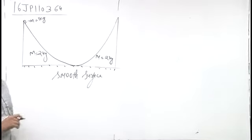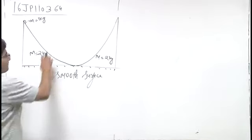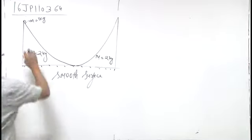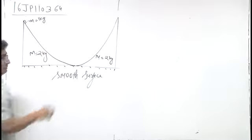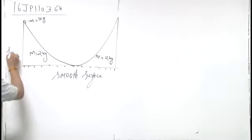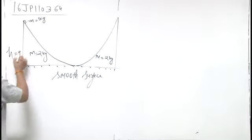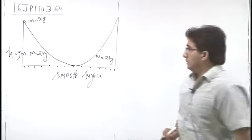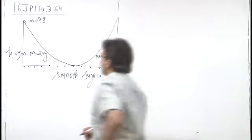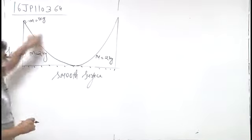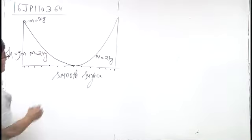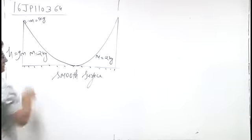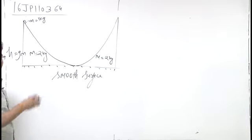In this question, all surfaces are smooth — there is no friction. A block of mass 1 kg is released from a height h equal to 9 meters. When this block moves, it will exert a force on the wedge, so the wedge will also move.